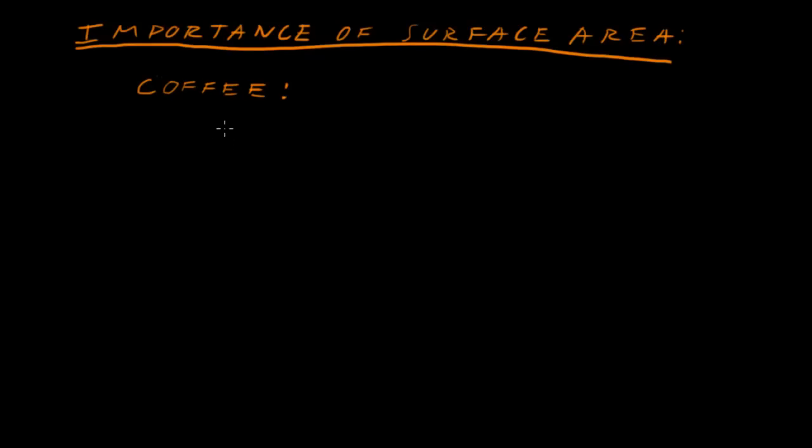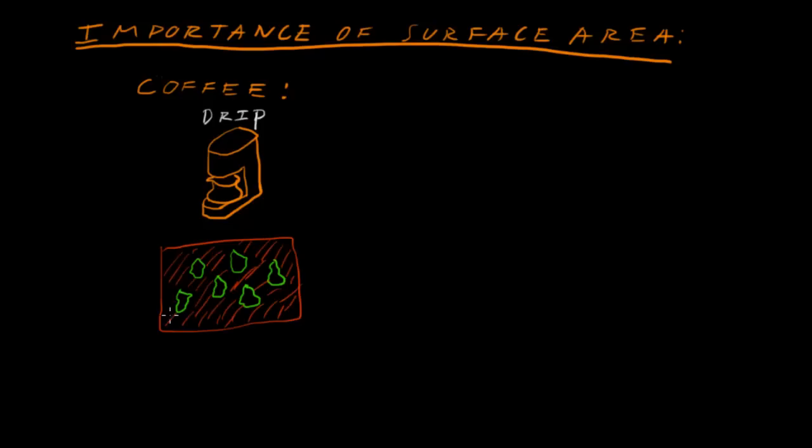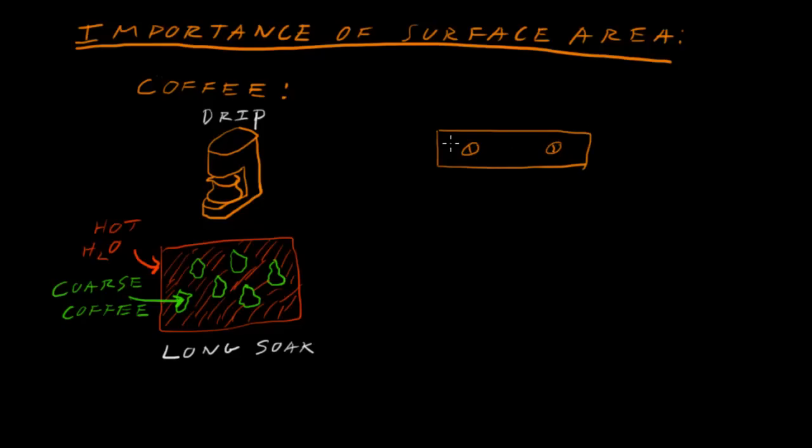And the best example to exemplify this is coffee. Think of a couple different ways you can make coffee. You can take a drip coffee machine, which has a coarse grind. So our little green fluorescent particles there, that's our coffee. And it sits in hot water for a decent amount of time. It's kind of a long soak for the coffee to sit in there. So we have large pieces of coarse coffee so that it doesn't turn bitter. We match the size of the coffee to the temperature of the water and the amount of time it takes for the water to go through.